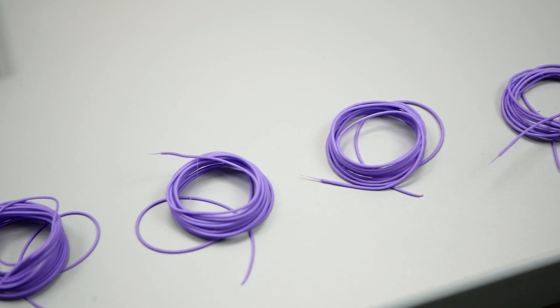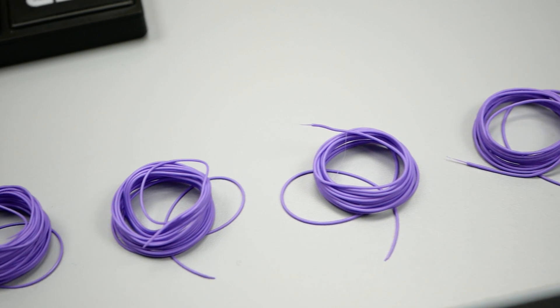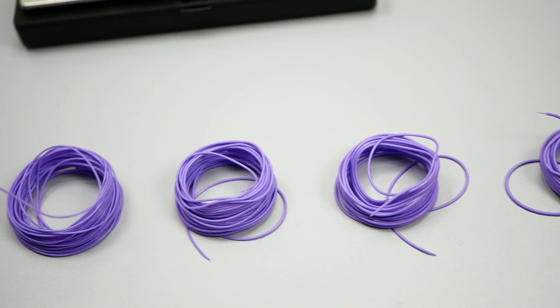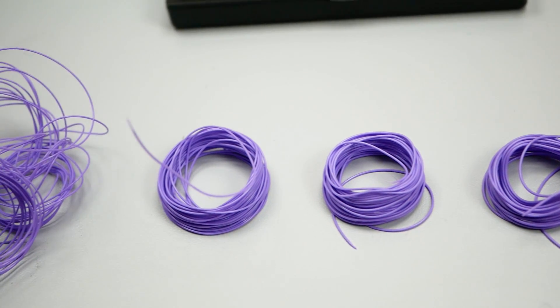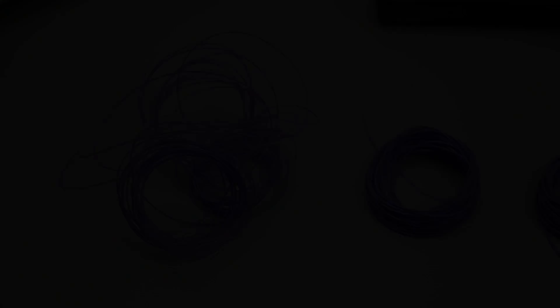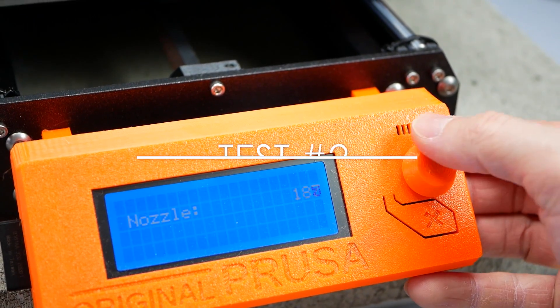This all means that with the standard V6 setup and Bontech gears, around 10-15mm³ per second is the extrusion limit if you print at 215 degrees nozzle temperature. But how does the temperature add to the equation?